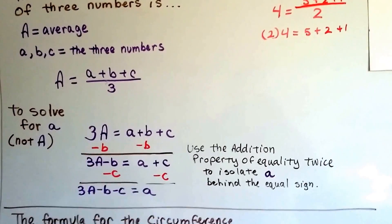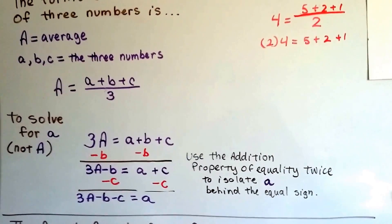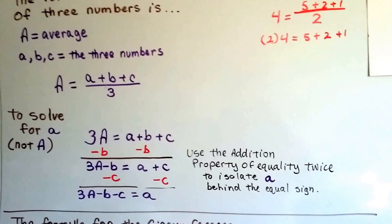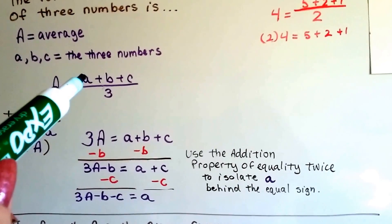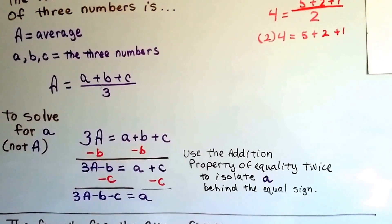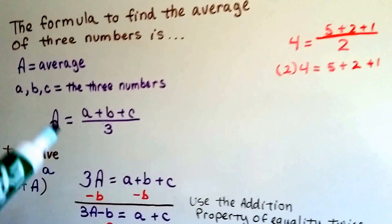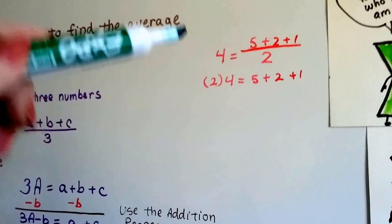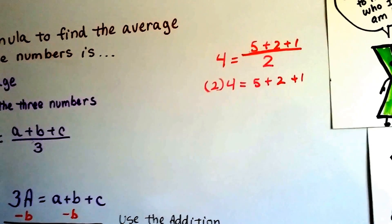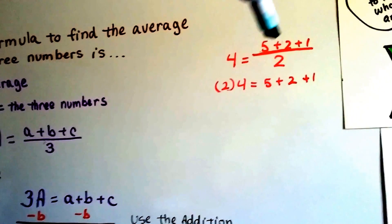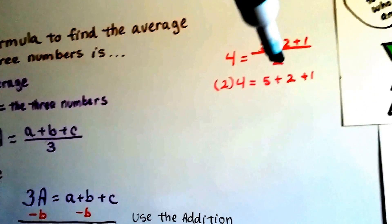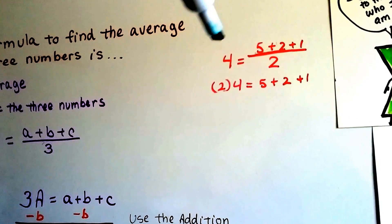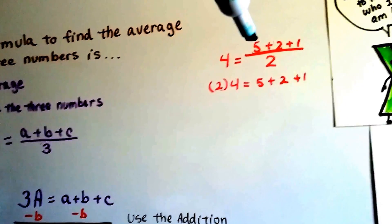And then use the addition property of equality twice to isolate this A behind the equal sign if we want to solve to find out what that first number A is. Think of it this way. What if I said, instead of A equals ABC over 3, I said 4 equals 5 plus 2 plus 1 over 2? 5 plus 2 plus 1 is 8. 8 divided by 2 is 4. So this is a true equation.